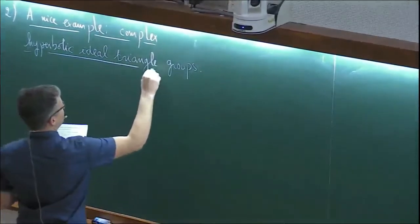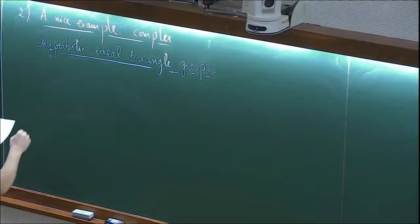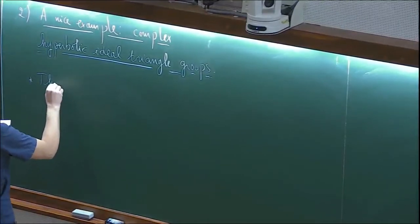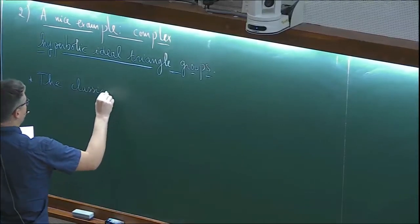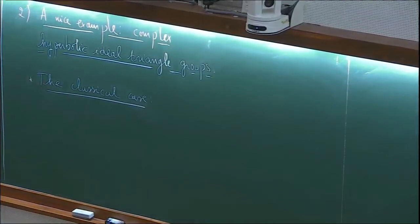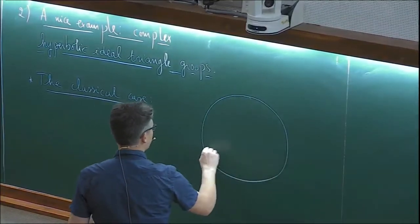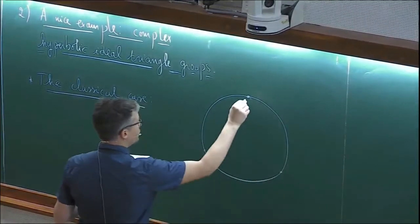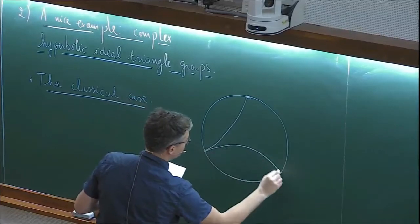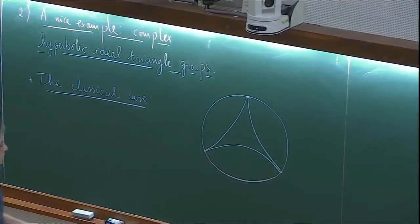Before moving to the complex hyperbolic setting, let me do the classical ideal triangle group. So we take an ideal triangle in the usual Poincaré disk. And as I was saying yesterday, up to isometry, there is only one such thing. So we have an ideal triangle with three geodesics.